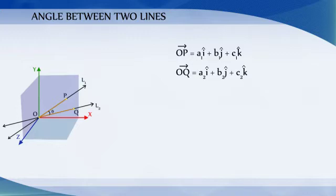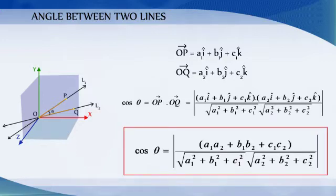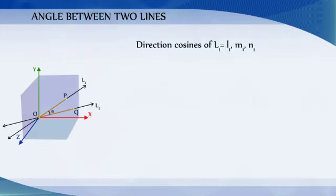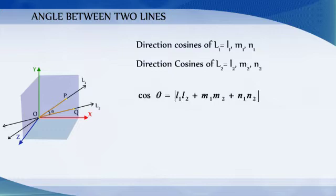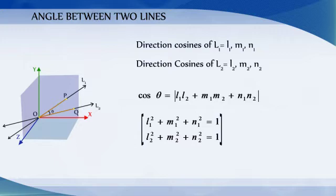Therefore, the angle between the vectors OP and OQ is given by: cos theta is equal to the modulus of (A1·A2 + B1·B2 + C1·C2) divided by root over (A1² + B1² + C1²) into root over (A2² + B2² + C2²). If instead of direction ratios, direction cosines L1, M1, N1 for line 1 and L2, M2, N2 for line 2 are given, then the angle is cos theta equals modulus of (L1·L2 + M1·M2 + N1·N2), since L1² + M1² + N1² and L2² + M2² + N2² both equal 1.